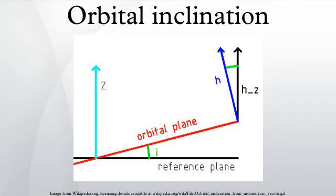Orbits - the inclination is one of the six orbital parameters describing the shape and orientation of a celestial orbit. It is the angular distance of the orbital plane from the plane of reference, normally stated in degrees.